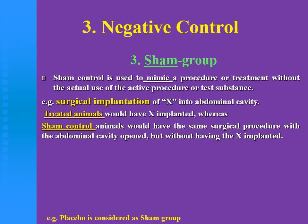For example, surgical implantation of X independent variable into the abdominal cavity. In treated animals, we will implant X. While in sham-operated animals, we just do the same surgical procedure — we open the abdominal cavity without implanting X.